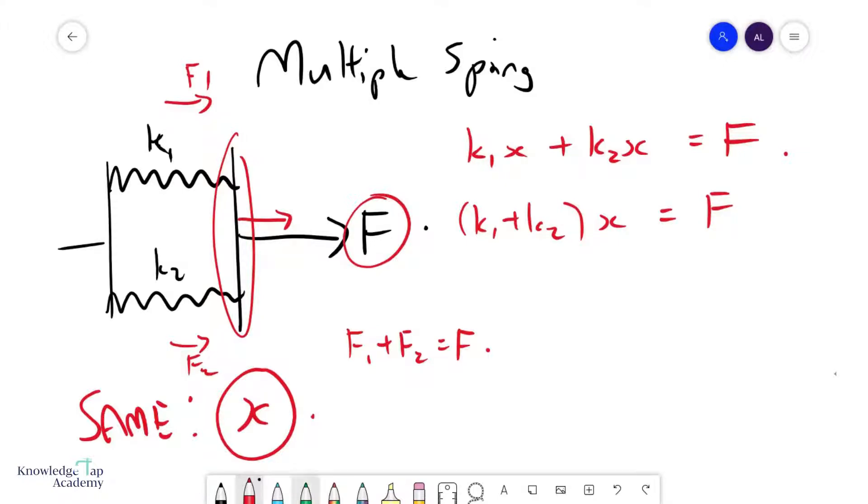And so I can think of an overall spring constant for the combined spring. And so we can say that f equals this new spring constant times x, which we'll call k effective. And so for springs in parallel, k effective is simply the sum of the individual spring constants in the parallel system.